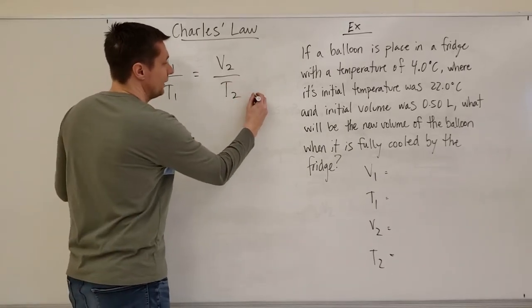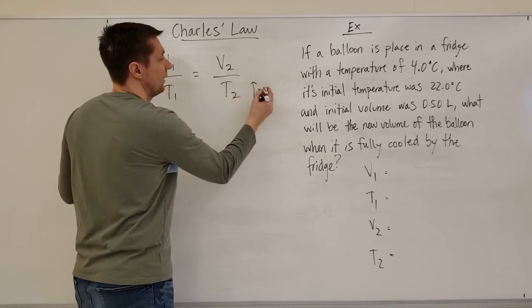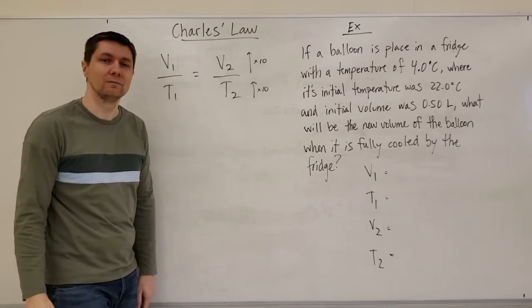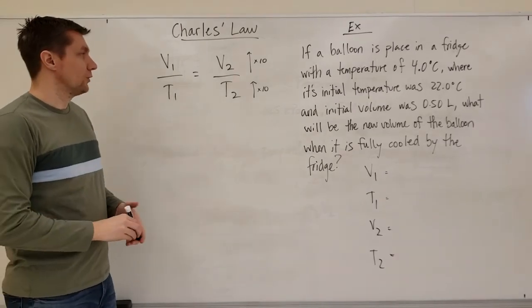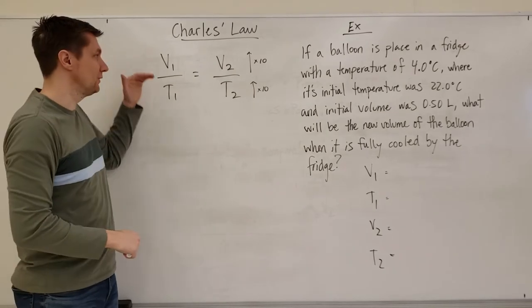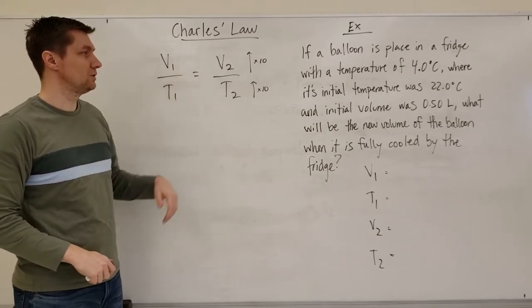So if the temperature goes up by a factor of 10 then the volume is going to go up by a factor of 10. And so this is the formula that we have in order to show that relationship. V1 over T1 equals V2 over T2.